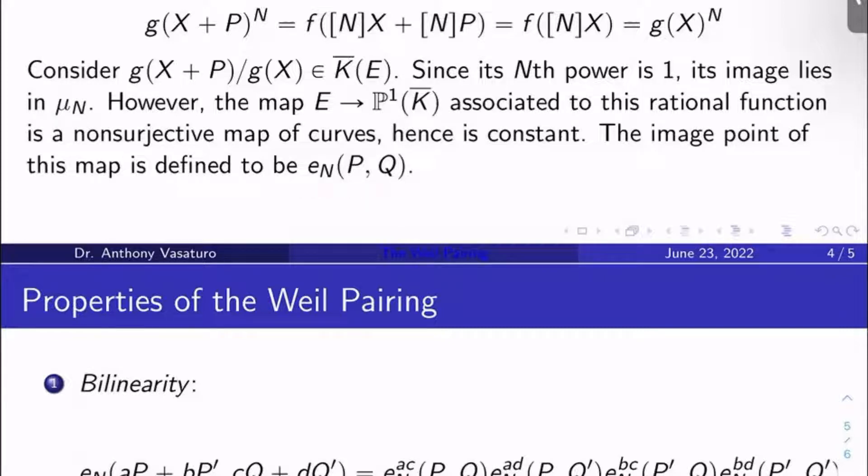That is e_N when P and Q plug in. So that's how you define the Weil pairing. So you give me a P and Q, I hook up this function, I look at its image. It happens to live in μ_N. Its image happens to be constant. So that point is the Weil pairing acting on P and Q.